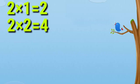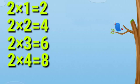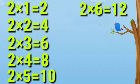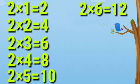Two, one's a two. Two, two's a four. Two, three's a six. Two, four's a eight. Two, five's a ten. Two, six's a twelve. Two, seven's a fourteen. Two, eight's a sixteen. Two, nine's a eighteen. Two, ten's a twenty.